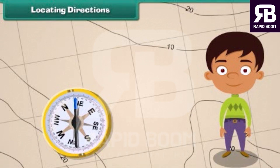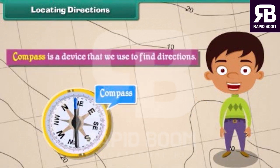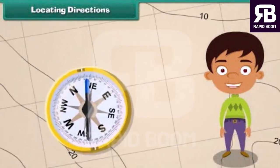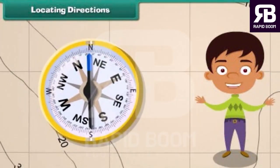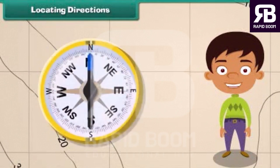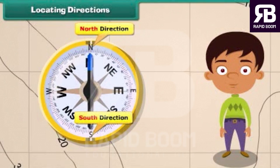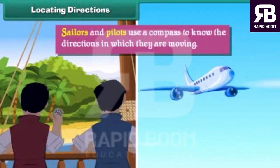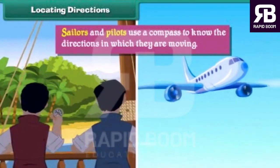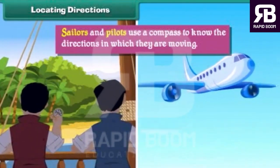Locating directions. A compass is a device that we use to find directions. A compass has a needle that rotates to indicate direction. The head of the needle always points towards north and the tail towards south. Sailors and pilots use a compass to know the directions in which they are moving.